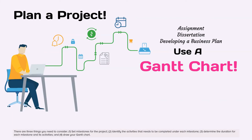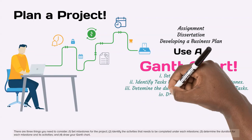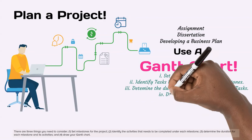There are three things you need to consider: 1. Set milestones for the project. 2. Identify the activities that need to be completed under each milestone. 3. Determine the duration for each milestone and its activities. And 4. Draw your Gantt chart.